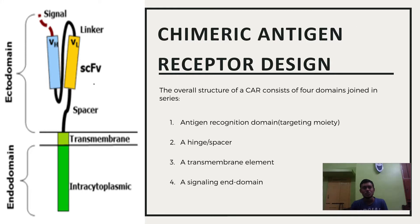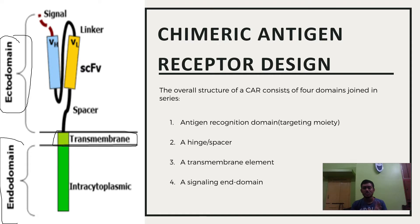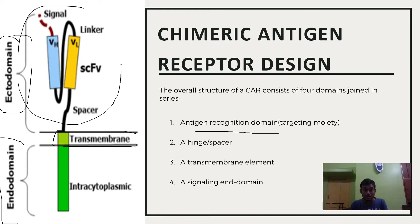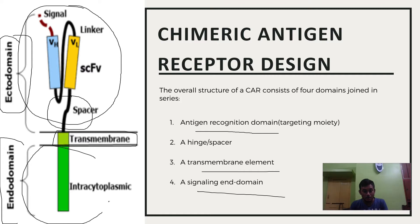The chimeric antigen receptor consists of the same major domains as any receptor: the ectodomain, which is the head; the transmembrane, which is the middle part; and the tail, which is the endodomain. Going deeper, this receptor consists of an antigen recognition domain in the ectodomain, then the hinge or spacer above the transmembrane, then the transmembrane element, and lastly the signaling endodomain.